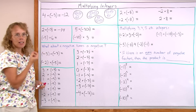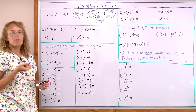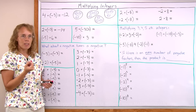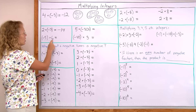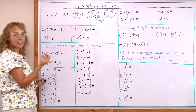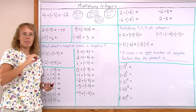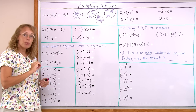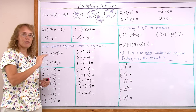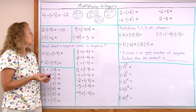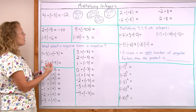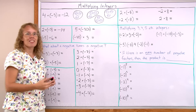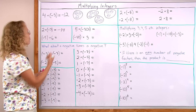What about negative 5 times 6? Multiplication is commutative. You can change this to be 6 times negative 5, so you can still think of it as 6 groups of negative 5. And so again, it's going to be just lots and lots of negatives — negative 30.